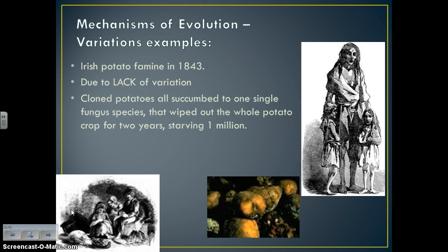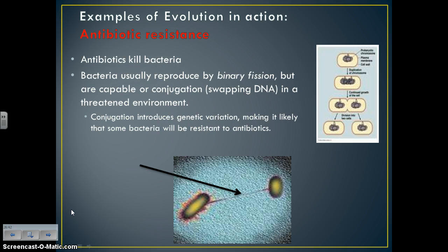A great example of the benefit of genetic variation is the Irish Potato Famine of 1843. It happened because there was a lack of variation — all the potatoes were clones, genetically identical to one another, and they all succumbed to one single fungus species that wiped out the whole potato crop for two years, starving about one million people. On the other hand, genetic variation is the reason bacteria can now survive against strong medicines — we have antibiotic resistance.